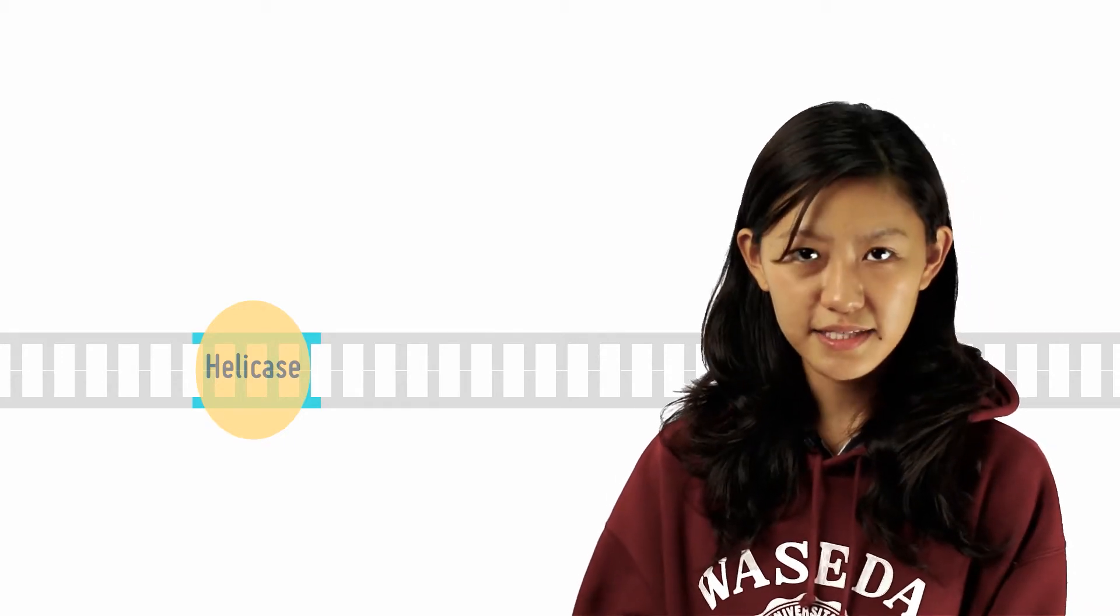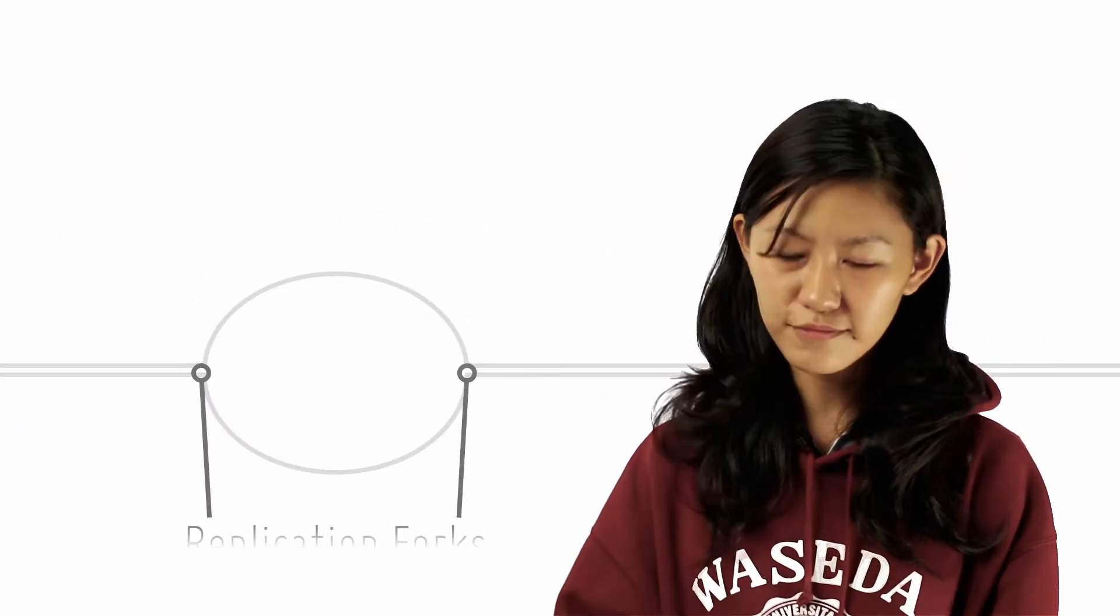Helicase then unzips and separates two parental strands by disrupting hydrogen bonds between the base pairs. This gives you two replication forks and one replication bubble.